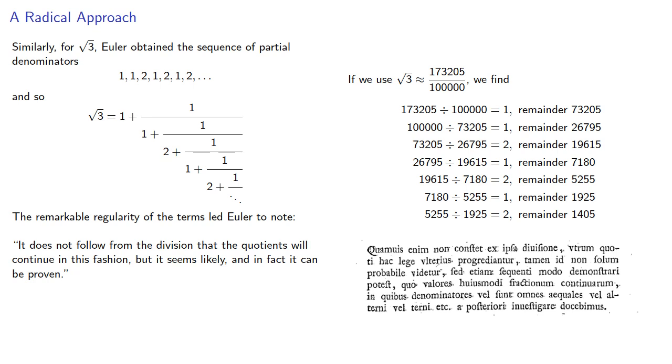Which, if you read that carefully, is a very interesting thing to say, because Euler is essentially saying that we begin with our suspicion of what is true, and then go on to a proof.